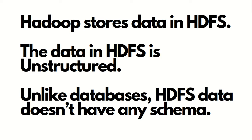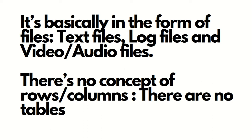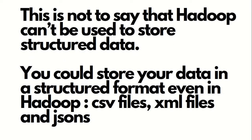The first point is unstructured data. Hadoop stores data in the Hadoop Distributed File System, which we abbreviate as HDFS. Data in HDFS is unstructured — unlike databases, HDFS data doesn't have any schema or structure. The HDFS data is available in the form of files, which includes text files, log files, or audio and video files. There is no concept of rows, columns, or tables.